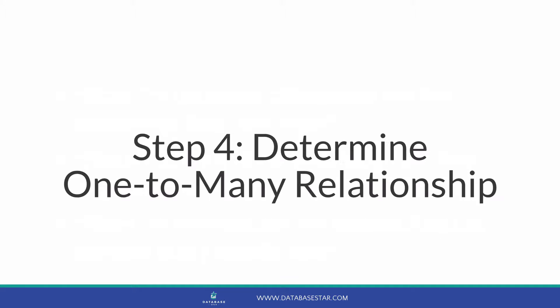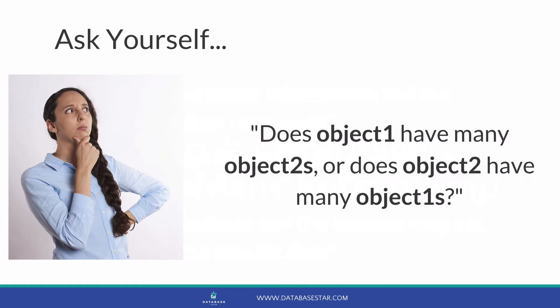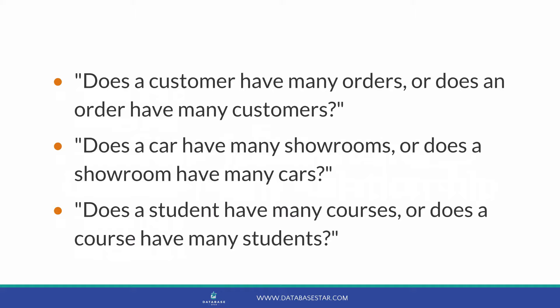Step four is where we determine if it is a one-to-many relationship. Not all of the relationships we define will be one-to-many, but this step will let you identify if they are or not. To work out if a relationship is one-to-many, ask yourself: does object one have many object twos, or does object two have many object ones? This will help you work out which way your relationship goes. Substituting your actual objects, the questions become: does a customer have many orders, or does an order have many customers? Does a car have many showrooms, or does a showroom have many cars? Does a student have many courses, or does a course have many students?